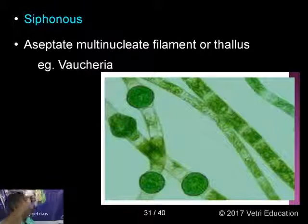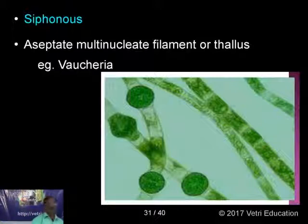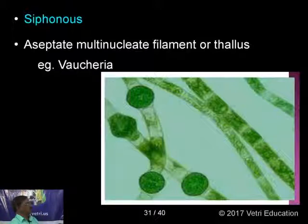The siphonous form is tube-like — siphon means tube. The thallus is aseptate and multinucleate, containing many nuclei. Example: Vaucheria, commonly found in sand — it is a psammophyte.